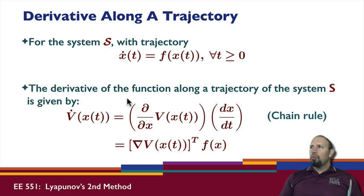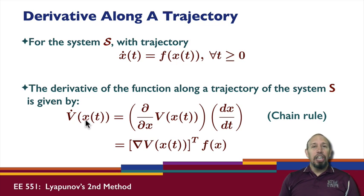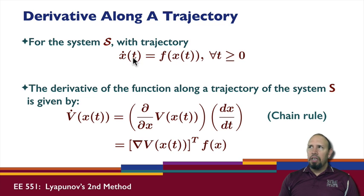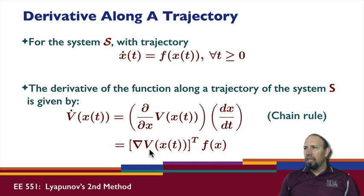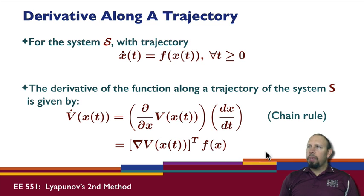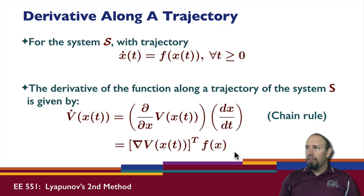When we take the derivative in general for a scalar function of a vector variable, we have the gradient term, but we don't know what the dx/dt term is. In our case, because we have a system with a trajectory, we know what that derivative is — it's given by the state equation. Notice that on the right-hand side there are no derivatives with respect to time; there is a derivative with respect to x, but this is just a function of x.